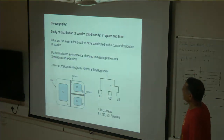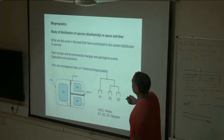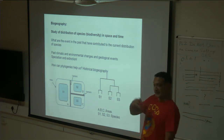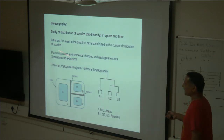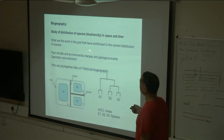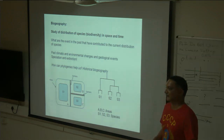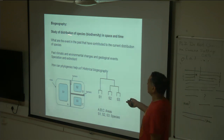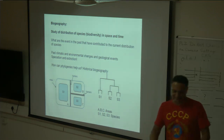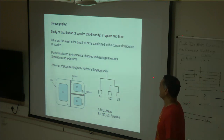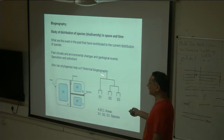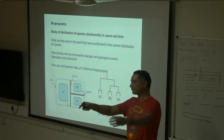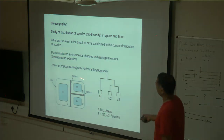Biogeography is the study of distribution of biodiversity in space and time. What I showed you was just space — how is biodiversity distributed in space. But now we bring in the time component. In today's biogeography, we ask questions like: what are the events in the past that have contributed to the current distribution of species? Those events include past climatic and environmental changes, geological events, which have led to extinctions in some cases and speciation in others.